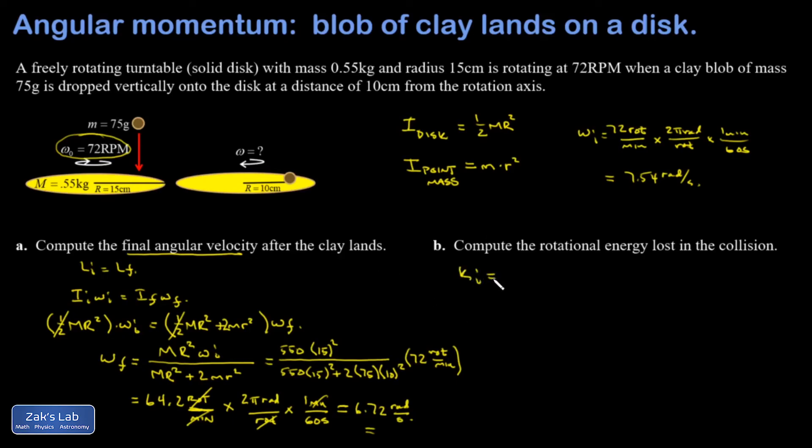So my initial rotational kinetic energy is going to be one-half I omega squared. And in the initial state, my moment of inertia was just one-half MR squared for the disk. So one-half times 0.55 kilograms times R squared. Again, I have to be careful to stay in SI units now. So there's one-half MR squared in SI units, and then omega squared in the initial state. That's 7.54 all squared. And I end up with 0.176 joules of kinetic energy.